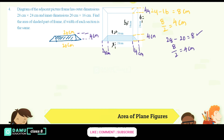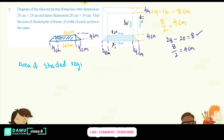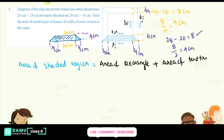Adding both sides gives 8 cm total on each dimension. The area of the shaded region equals the area of a rectangle plus the area of 2 triangles.